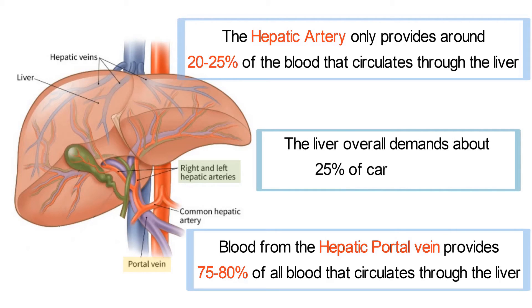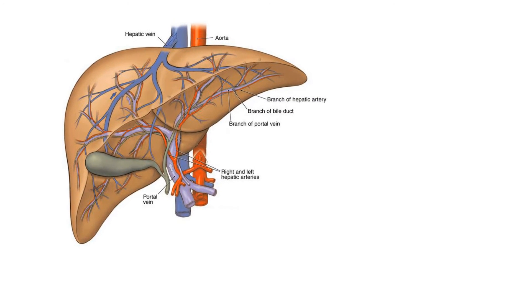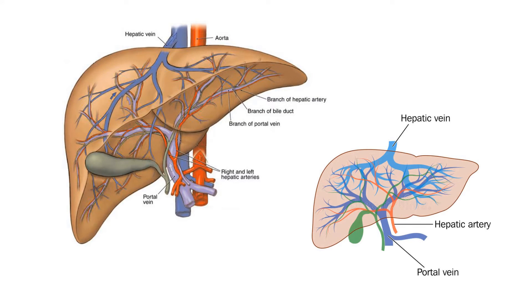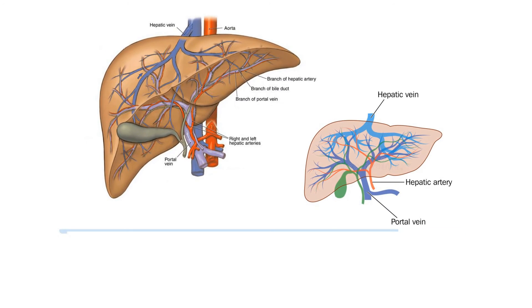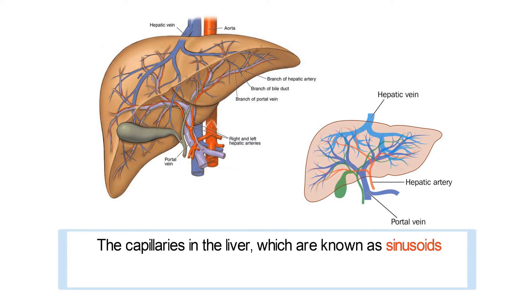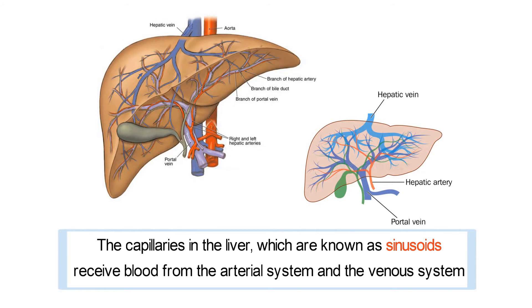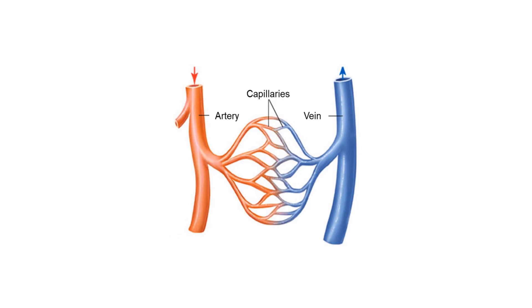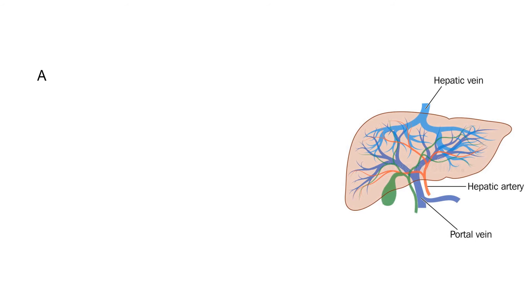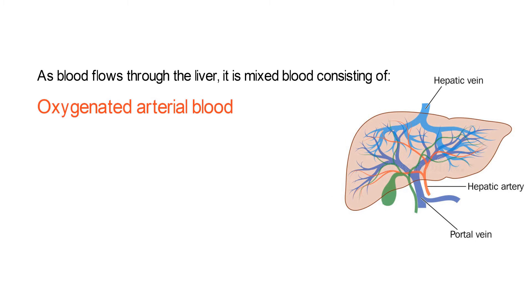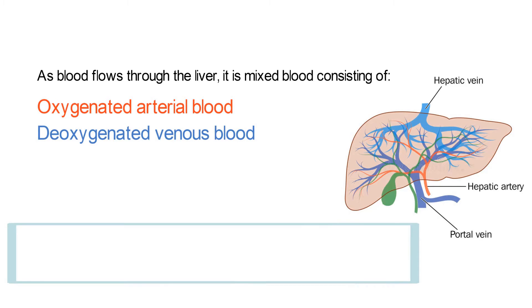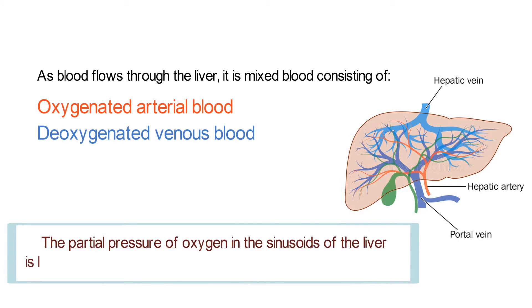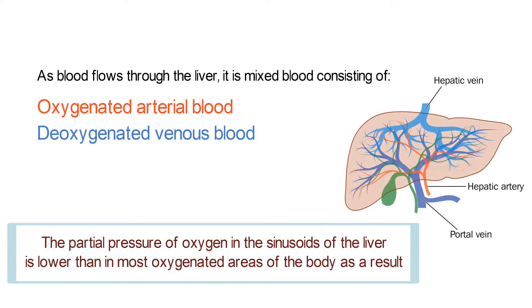The liver overall demands about 25% of cardiac output. However, the liver has yet another unusual characteristic in how its capillaries form. As the hepatic veins become smaller to form capillaries in the liver, branches from the hepatic artery converge with branches from the hepatic veins to form the capillary bed. Thus, the capillaries in the liver, known as sinusoids, receive blood from both the arterial and venous systems. Ordinarily, capillaries only receive blood from the arterial system. This means blood flowing through the liver is mixed blood consisting of oxygenated arterial blood and deoxygenated venous blood, and the partial pressure of oxygen in the sinusoids is lower than in most oxygenated areas of the body.